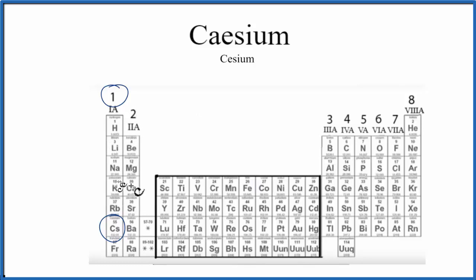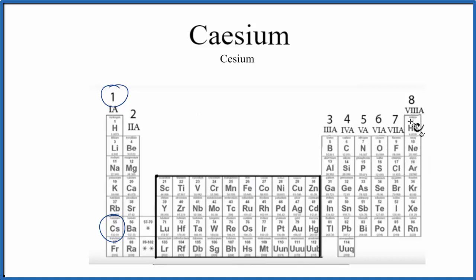Group two has two valence electrons. We skip the transition metals, and then we go three, four, five, six, seven, eight — and those are the noble gases. They have eight — a full outer shell.